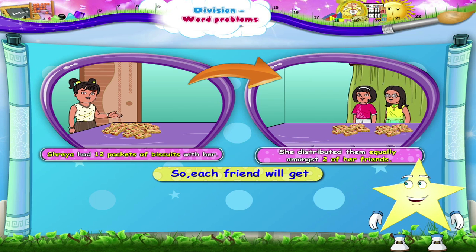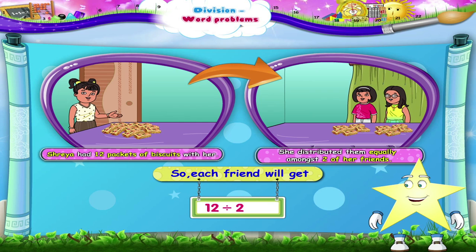So each friend will get 12 divided by 2, that is 6 packets of biscuits.